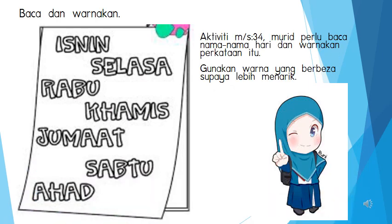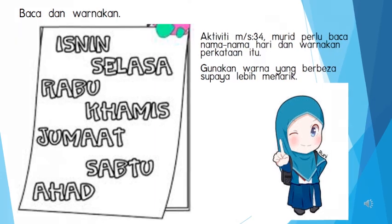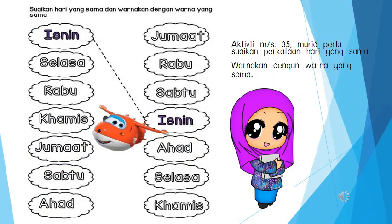Untuk aktiviti di muka surat 34, murid boleh baca nama-nama hari dan warnakan perkataan itu. Boleh gunakan warna yang berbeza supaya lebih menarik. Untuk aktiviti di muka surat 35, murid boleh sepadankan perkataan hari yang sama, kemudian warnakan juga dengan warna yang sama.